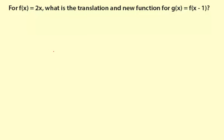For f of x equals 2x, what is the translation and new function for g of x equals f of x minus 1? So what we're doing is we're taking 1 away from the inputs.